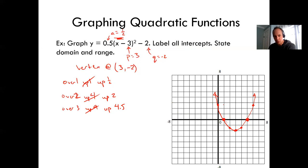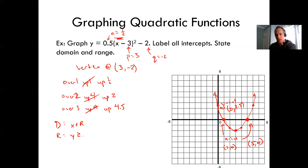Label all the intercepts. The y-intercept is at 2.5, so the coordinate is 0 comma 2.5. The x-intercepts are at 1 comma 0 and 5 comma 0. Domain: x is all real numbers. Range: y is greater than or equal to negative 2 — that's the lowest point at negative 2. Axis of symmetry: x equals 3.